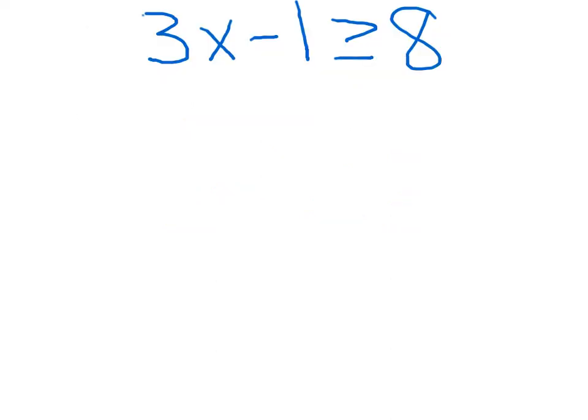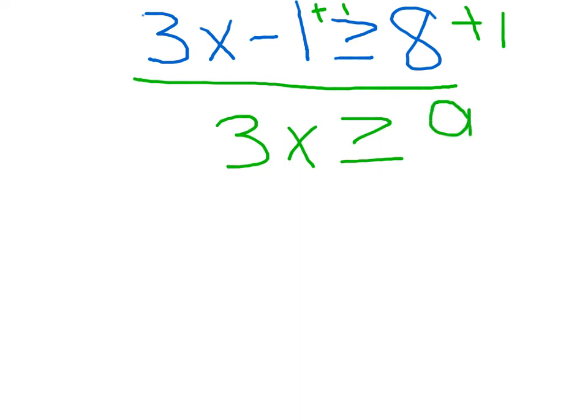Now once we've written our sentence into numbers and variables, as you can see, our 3x minus one is greater than or equal to eight is still there. We are going to solve this inequality. To solve this inequality, we are first going to add one to both sides. So we get 3x is greater than or equal to eight plus one, which gives us nine.